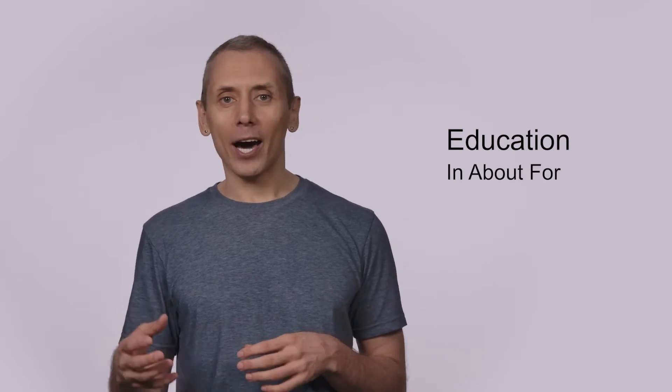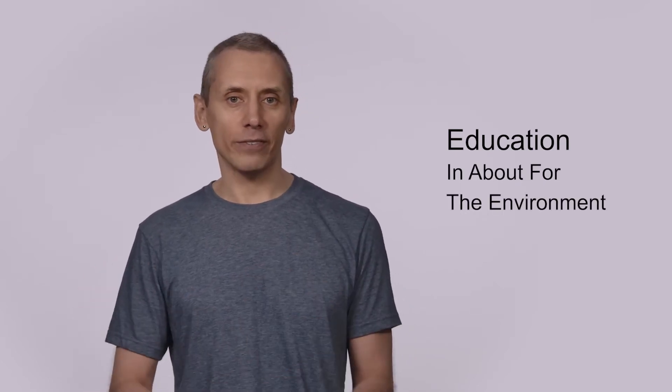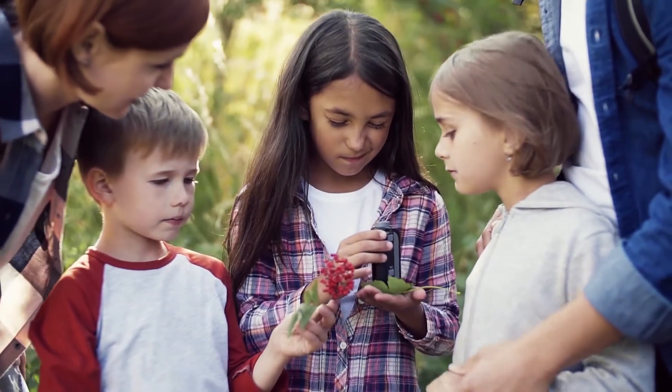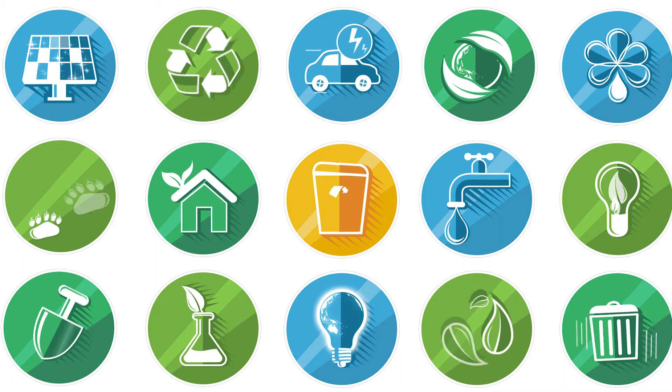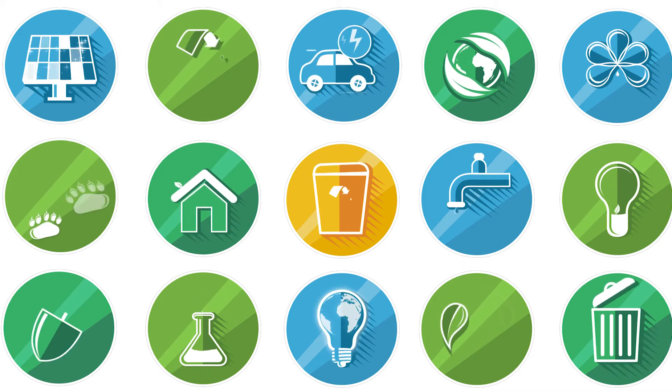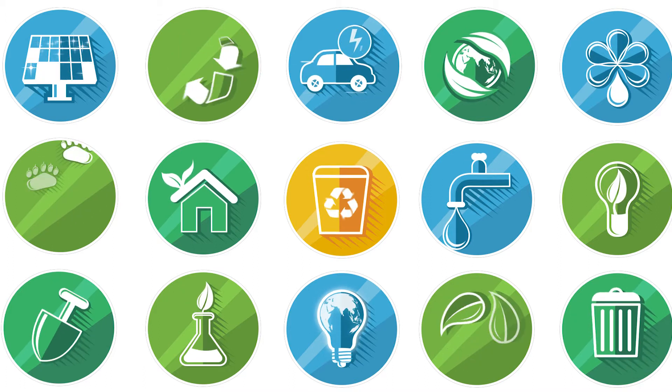Interestingly, although environmental education and E-STEM are different, they are both concerned about the environment. Scholars describe environmental education as education in, education about, and education for the environment. When we say in the environment, we mean that learning takes place outdoors in nature. About the environment means that learning focuses on the environment, ecosystems, and nature. And education for the environment means that environmental educators help us solve or mitigate environmental problems through individual behavior and collective action.